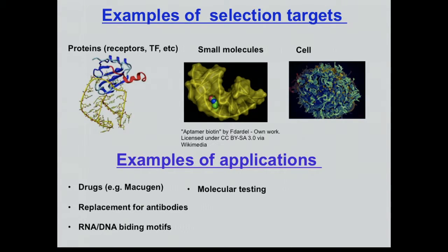A lot of attention is now given to what is called Cell-SELEX, and much of the work I'm going to present today is related to that. There are two major reasons for doing Cell-SELEX: one is to recognize cells in the organism that are responding to some pathogen, such as Ebola infection — you would like to grow aptamers that differentially bind to infected versus uninfected cells. The second is a very interesting concept: to use aptamers for targeted drug delivery.